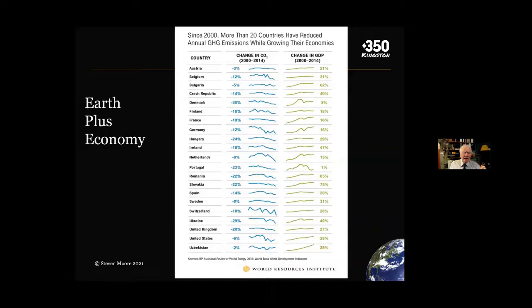Here are 20 countries in the last two decades that have reduced their GHG emissions while growing their economies. Twenty countries have done this, and you'll notice Canada isn't on the list. But it absolutely is possible — in fact, it's imperative that we reduce our annual GHG emissions and take a broad range of measures if we are to maintain some semblance of a just and equitable life on this planet.